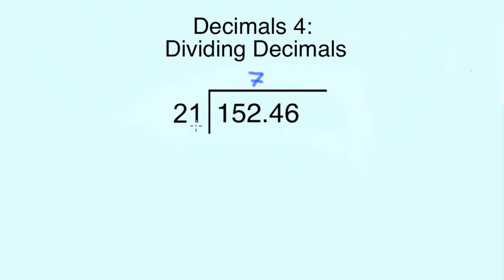So all we can do is 21 into 152. We can guess it's roughly around 7 times. 7 times 1 is 7, and 7 times 2 is 14, which gives us a number of 147.